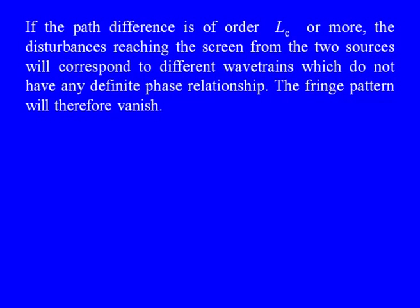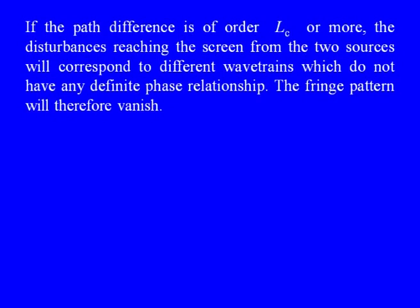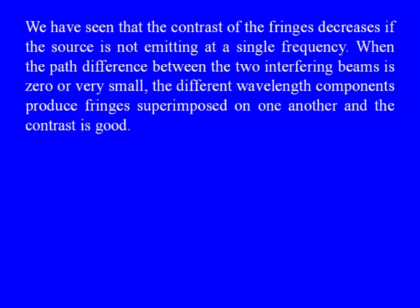If the path difference R1 minus R2, the difference between the sources and the point P on the screen, is of the order of l-c, the coherence length or more, the disturbances reaching the screen from the two sources will correspond to different wave trains. We do not have any definite phase relationship, and the result will be that the fringe pattern will vanish.